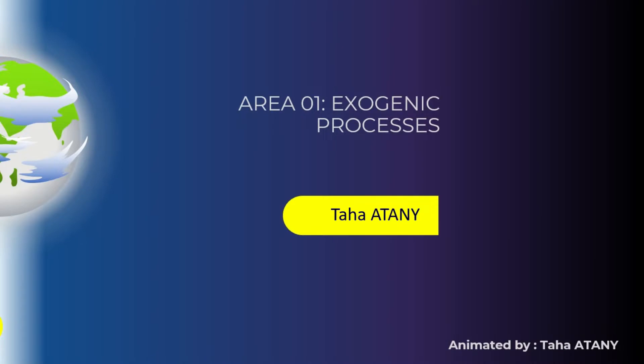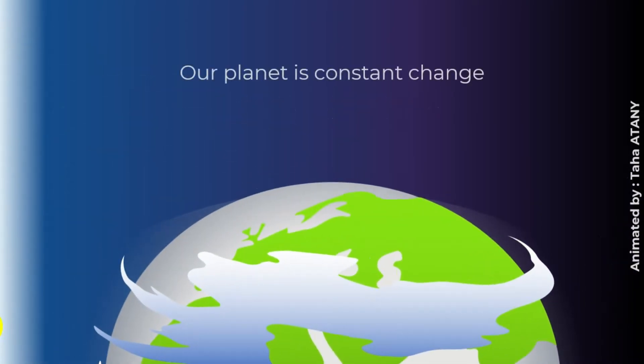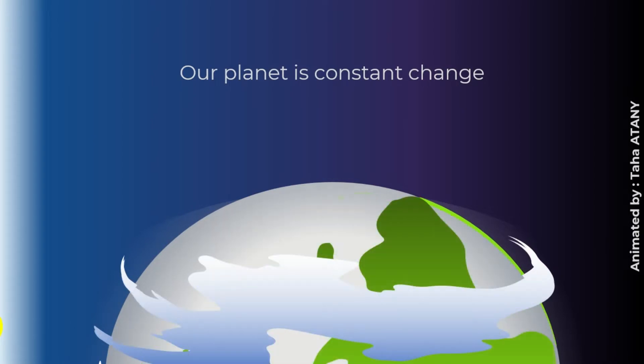Hello and welcome to this explainer video for area one of the first year of the baccalaureate curriculum: exogenic processes. As you know, our planet is in constant change. That means that the landscapes and landmarks that you notice around you will change through time.